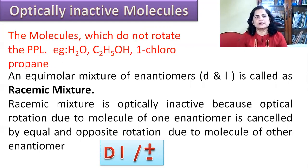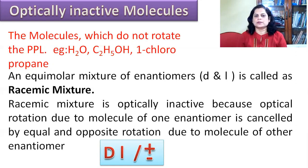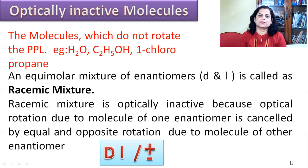An equimolar mixture of enantiomers — that is, an equimolar mixture of the dextro form and levo form — is called a racemic mixture. A racemic mixture is optically inactive because the optical rotation due to one enantiomer is cancelled by the equal and opposite rotation due to the other enantiomer. Racemic mixtures are denoted by D and L together, or by plus and minus signs together. For example, D,L-lactic acid indicates a racemic mixture of lactic acid.